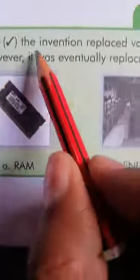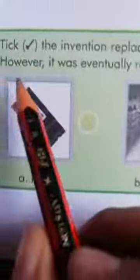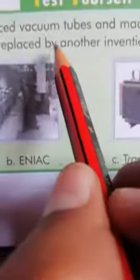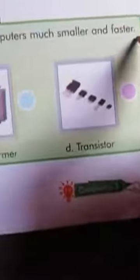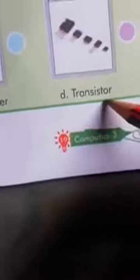Tick the invention that replaced vacuum tube and made computers much smaller and faster. However, it was eventually replaced by another invention. इसमें हमें दिया है vacuum tube की जगह कौन सा आविष्कार आया था जो vacuum tube से छोटे और तेज़गति से कार्य करने वाले थे. हमें यहां पर pictures दी है RAM, ENIAC, transformer, transistor.